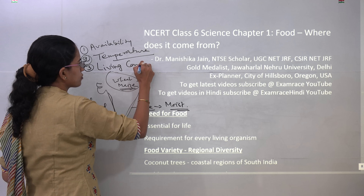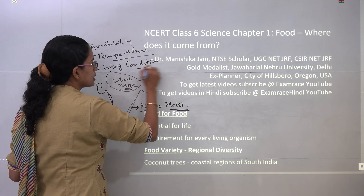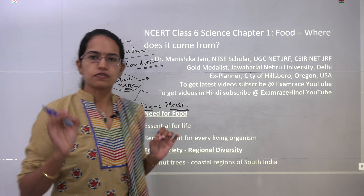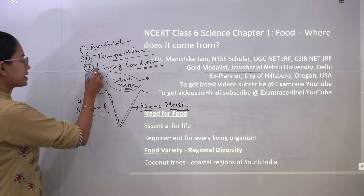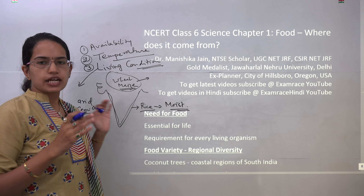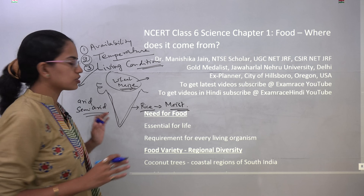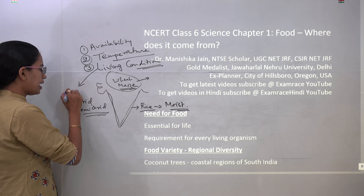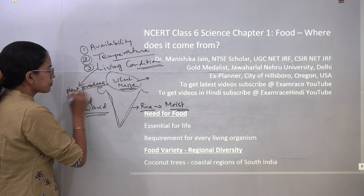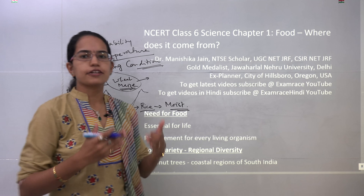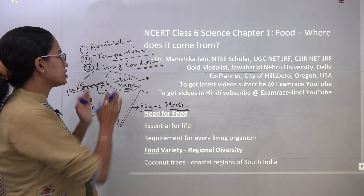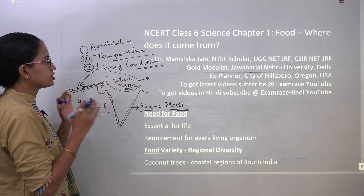The third important parameter is living conditions. For example, if you go to Antarctica, you would find more animals and animal produce would be the staple food found in that area. However, if you go to central India, which has an agro-based economy, you would find plant produce as the main source of subsistence. So the living condition determines the kind of food that you are consuming. These are the basic conditions.